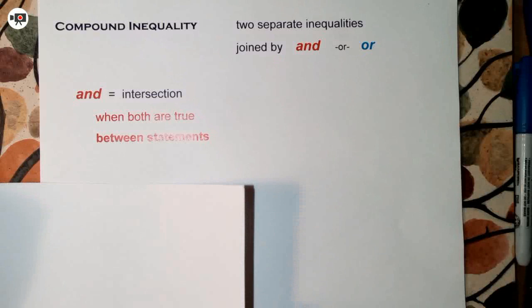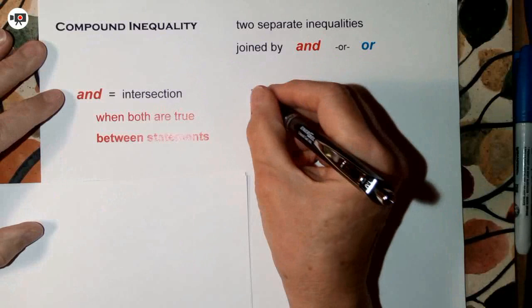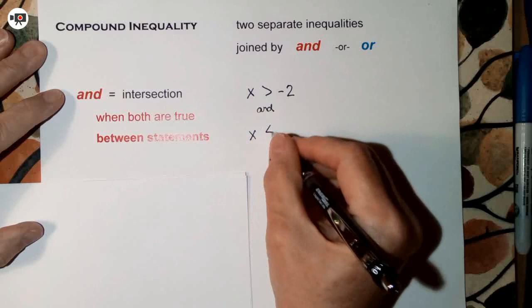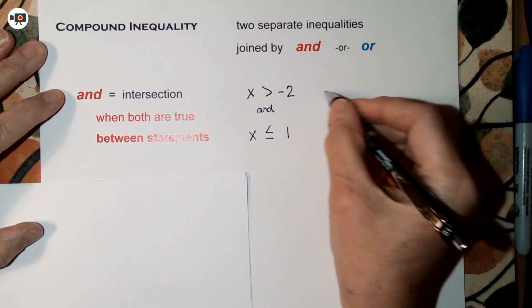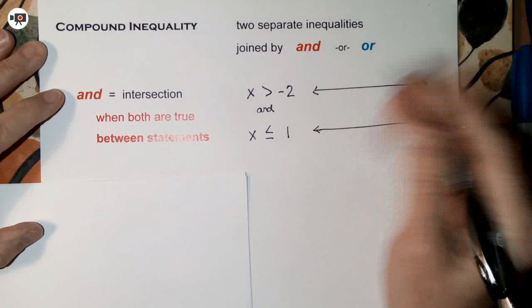Let's start with a problem where the two inequalities are x is greater than negative 2 and x is less than or equal to 1. Let's graph these individually and see what we get. We're going to do a simple number line graph with one variable — just show relatively where everything is.